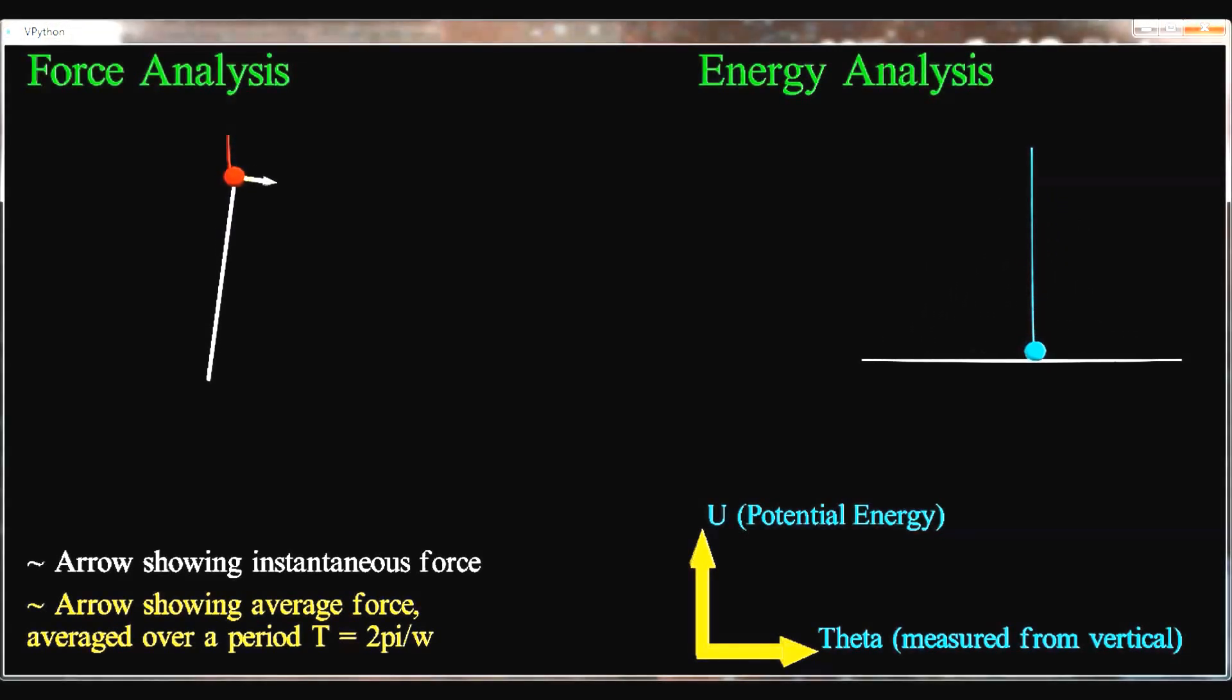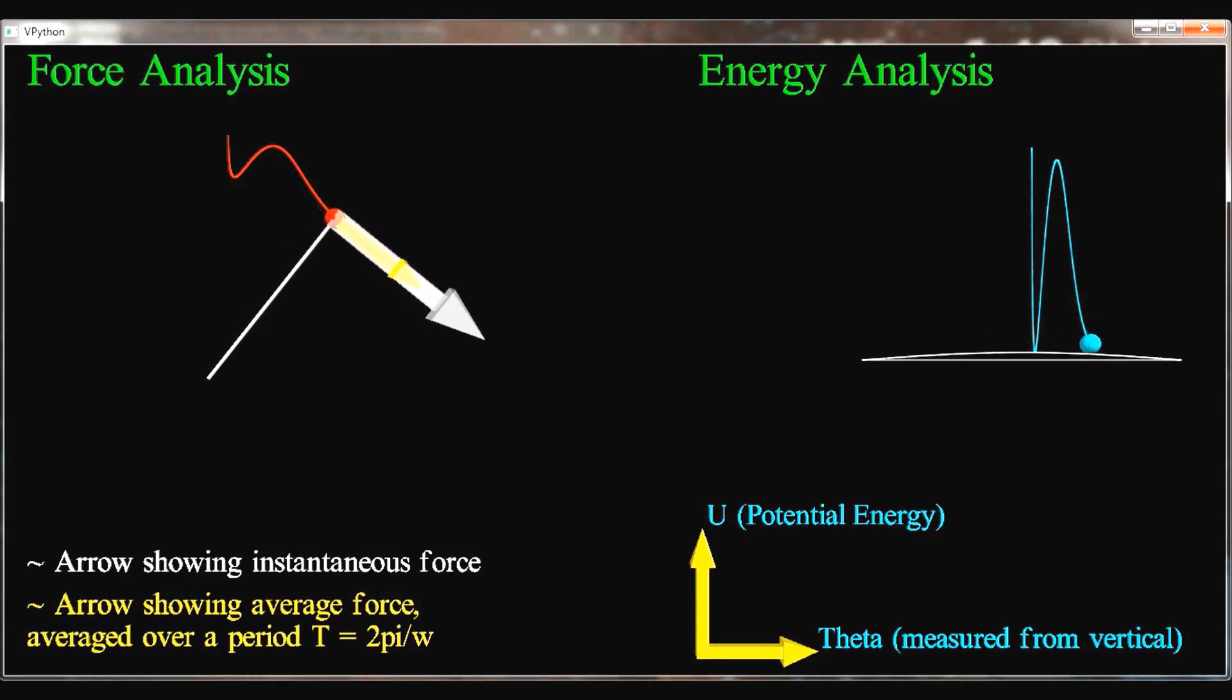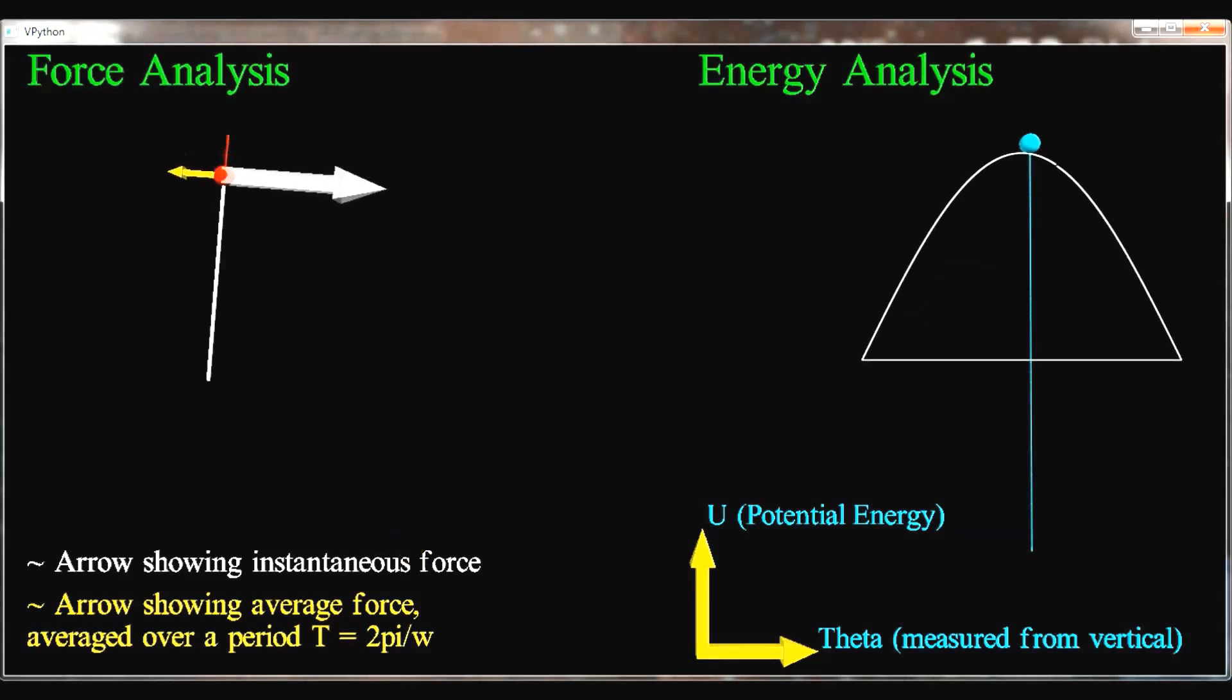On the right side, we're plotting potential energy versus theta that's changing with time. On the left, we're looking at the actual physical representation of the system. Right now it's being driven at a driving frequency of 10 radians per second, and as you can see, that's not high enough to stabilize the system.